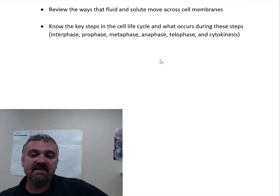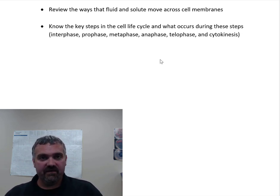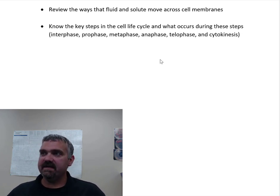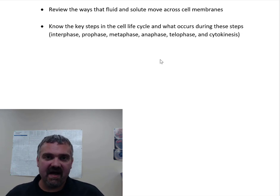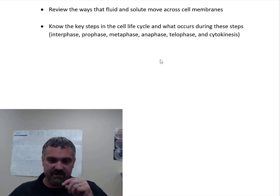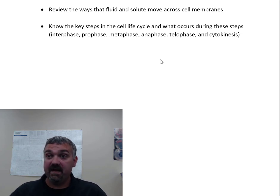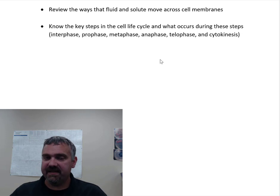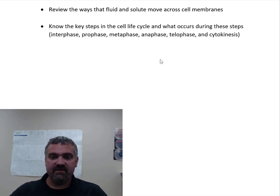Know the key steps in the cell life cycle: interphase, prophase, metaphase, anaphase, telophase, and cytokinesis. Interphase is when the cell is not dividing — it's doing its job — but it's also preparing to divide. During interphase, DNA is being doubled and organelles are starting to replicate and make copies. For most cells, about 90% of their time is in interphase. Some cells that don't divide would never leave interphase; stem cells or cells constantly churning out new cells would barely be in interphase.